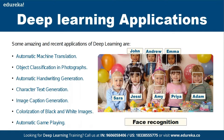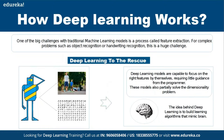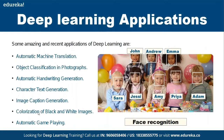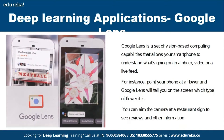Deep learning can also generate image captions. If I show you an image of a father, a kid, and their dog walking, we can infer that. But what if a program tells you that by looking at the image — giving you the sentence 'a family walking with their dog'? If it is able to generate that, it is called image captioning. Similarly, colorization of black and white images and automatic game playing can also be done using deep learning.